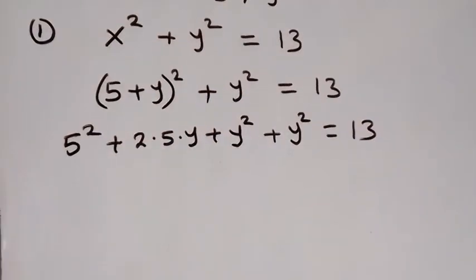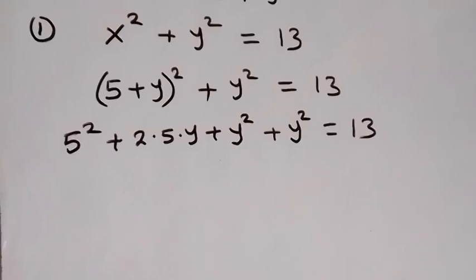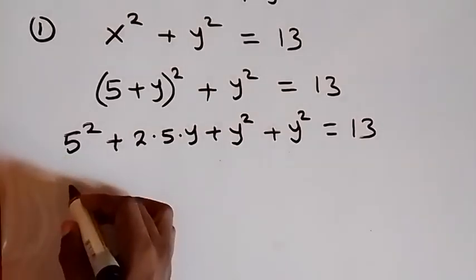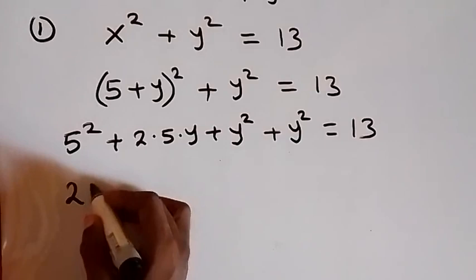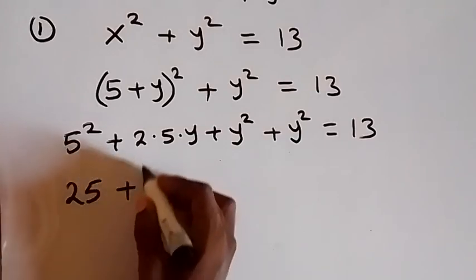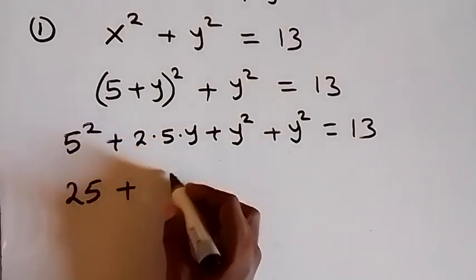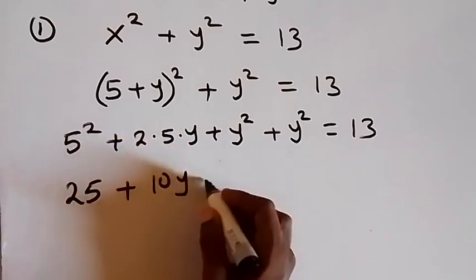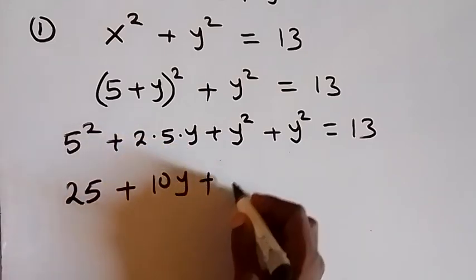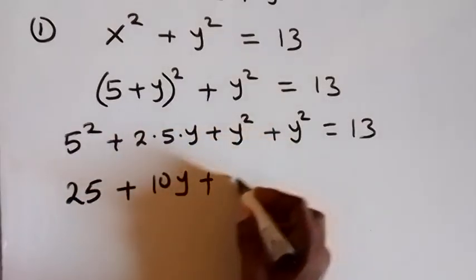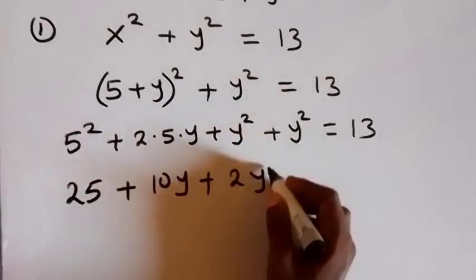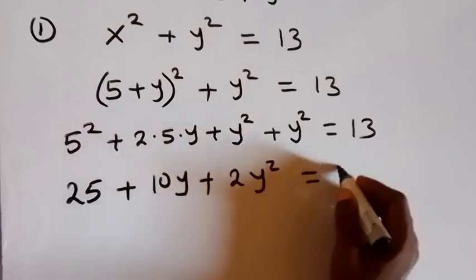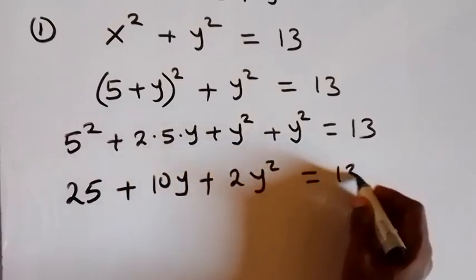Then when we simplify this: 5 squared is 25, then plus 2 times 5 that's 10, so that's 10y, then we have plus y squared plus y squared, that's 2y squared, then equals to 13.